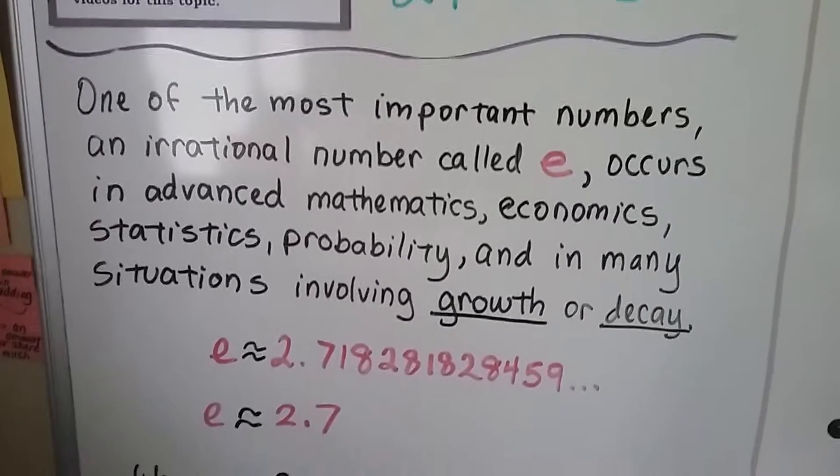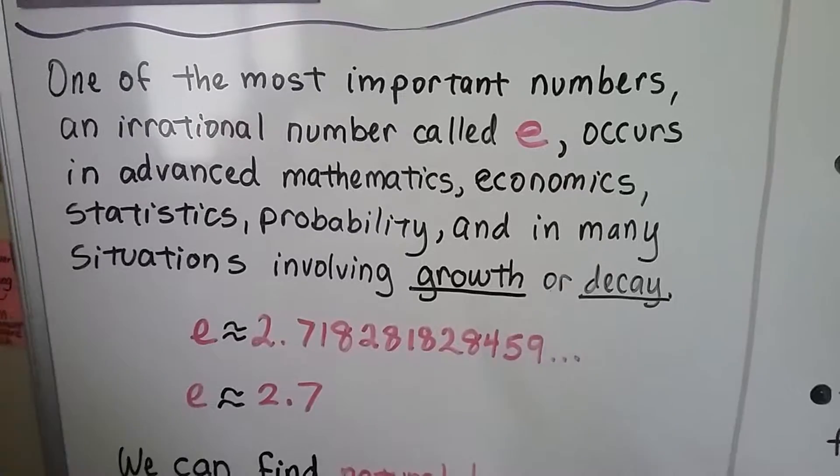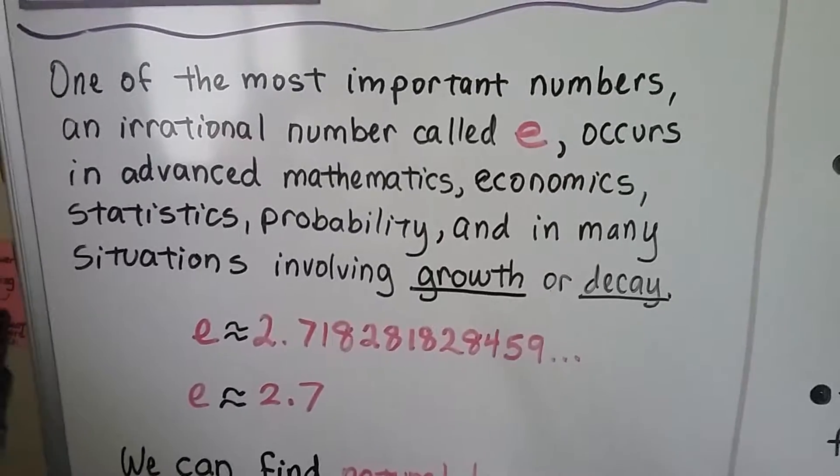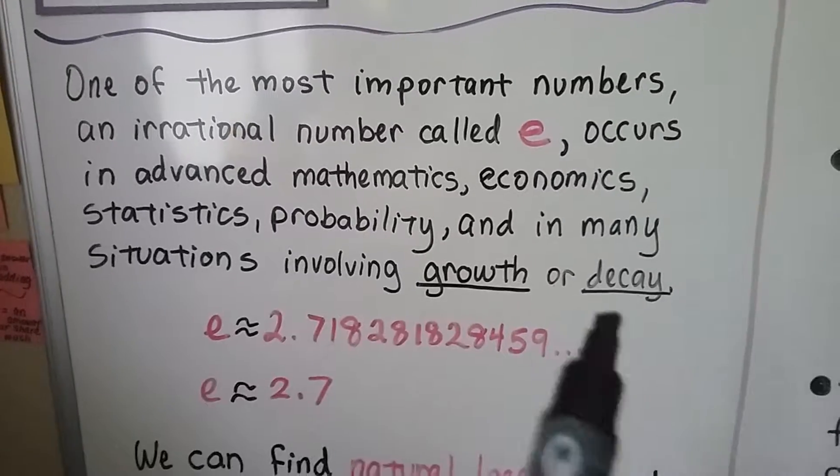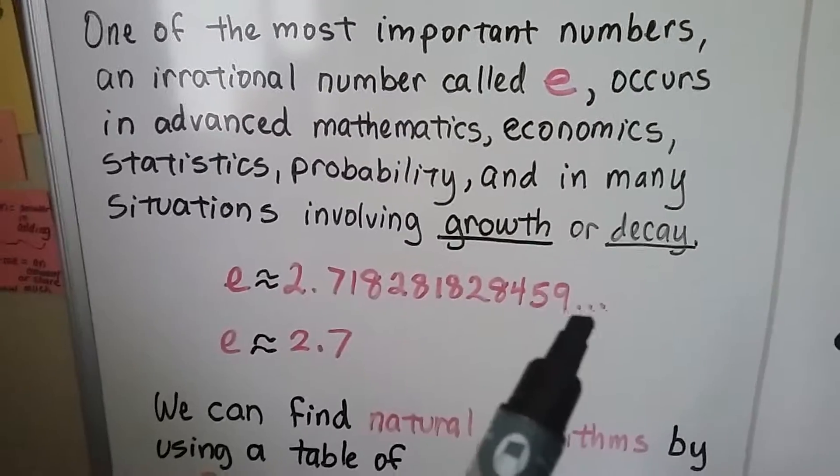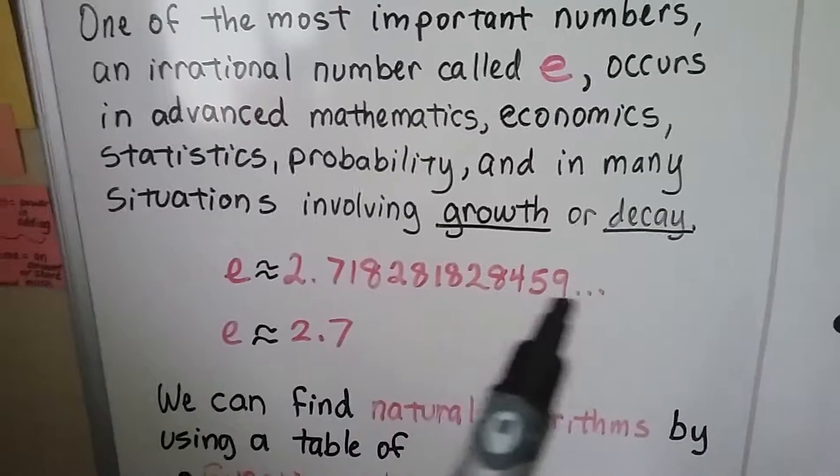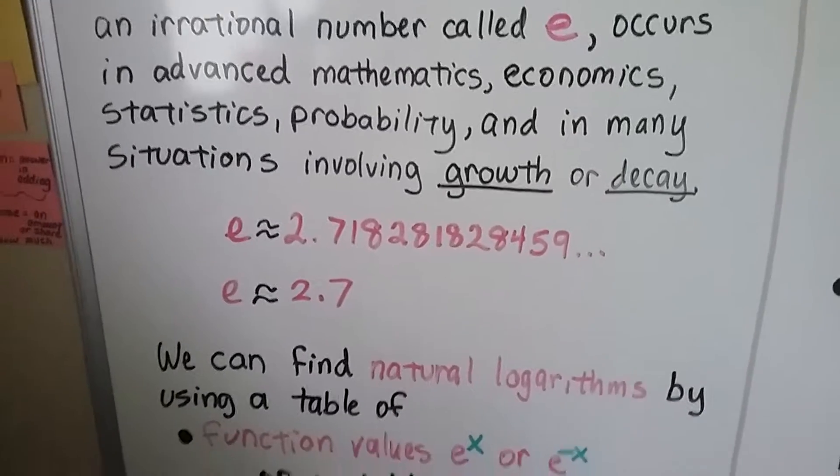As I said in the previous video, e is an irrational number, and it occurs naturally in sciences like biology, economics, and statistics. It involves growth or decay, and e is irrational, just like pi. Instead of writing the real long, never-ending decimal, we put 2.7.